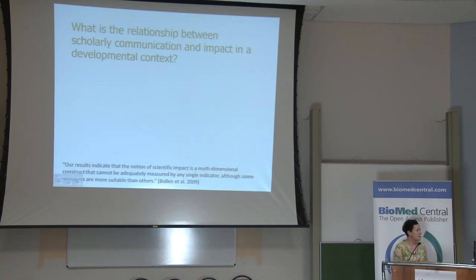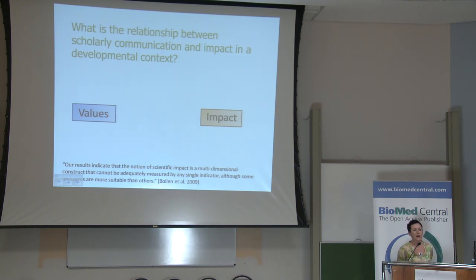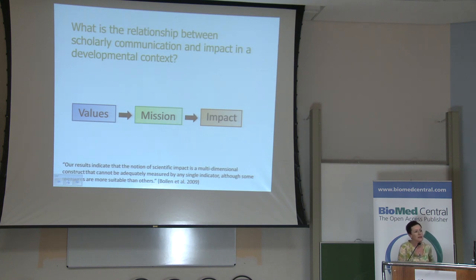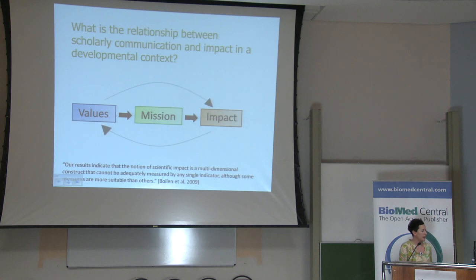The relationship between scholarly communication and impact is a very interesting one to consider in the developmental context. In our study we conducted a value study amongst academics in our participating institutions, because we thought there was an intrinsic relationship between the values that scholars and institutions held and the scholarly communication they were engaged with. We saw that institution mission statements really encompassed the values of the academic communities they spoke for — a lot of mission statements now have development impact right up front, with the first line saying something along the lines of addressing the socioeconomic challenges of our community, giving back to society.